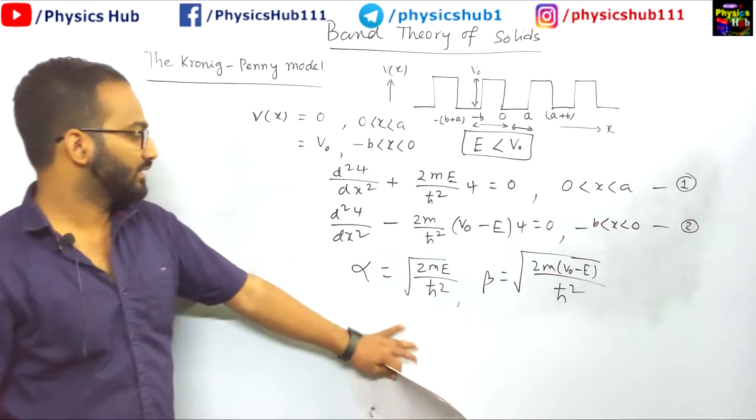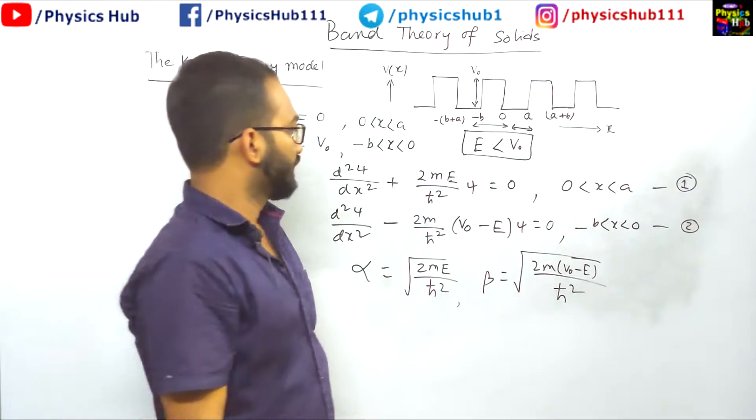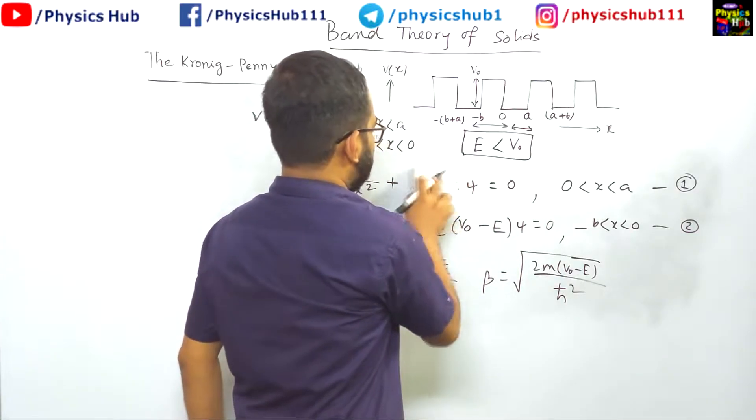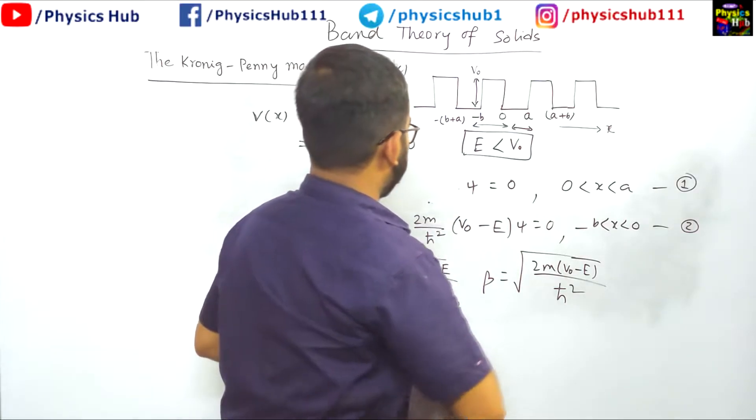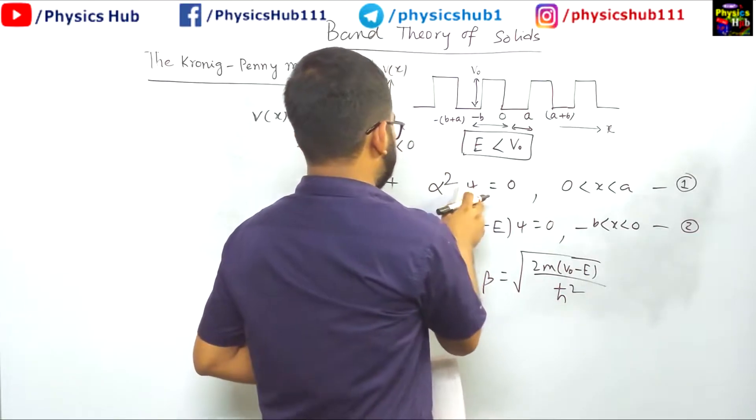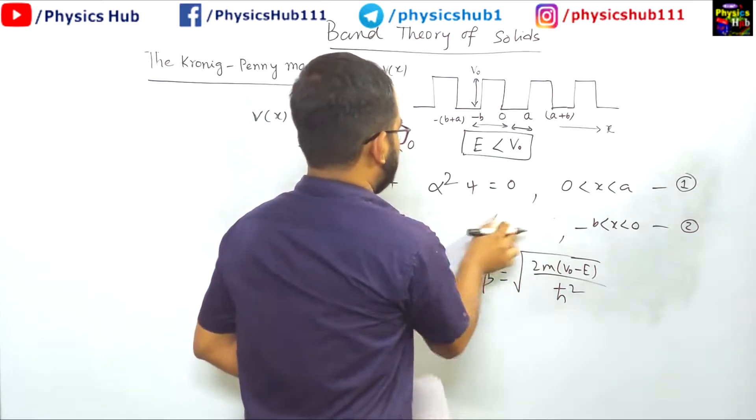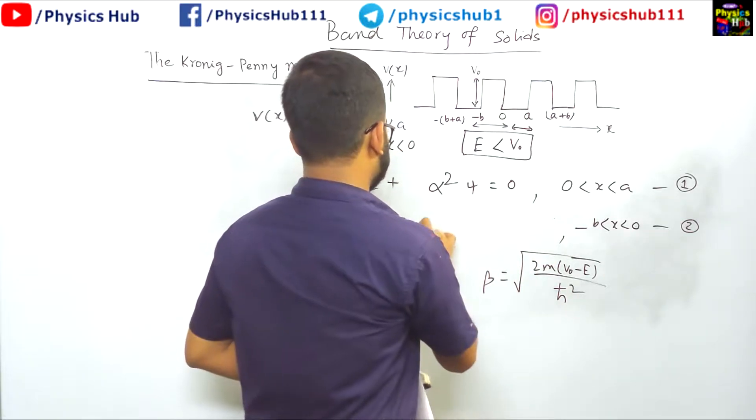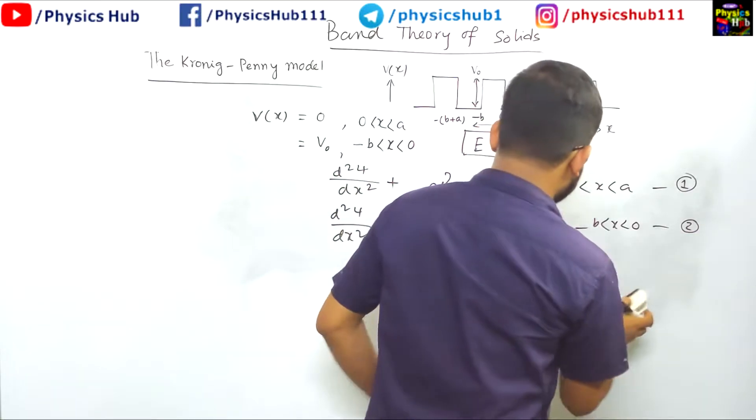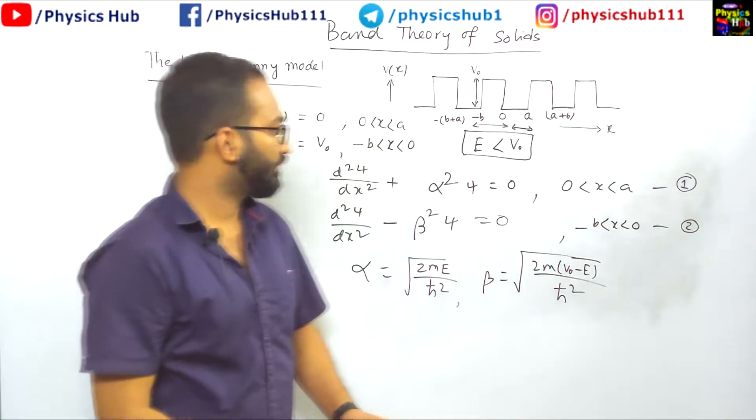So by replacing this value into this equation, what equations we get? So this will become α²ψ and the second equation will become minus β²ψ equals 0. So these are the two equations we have finally got.